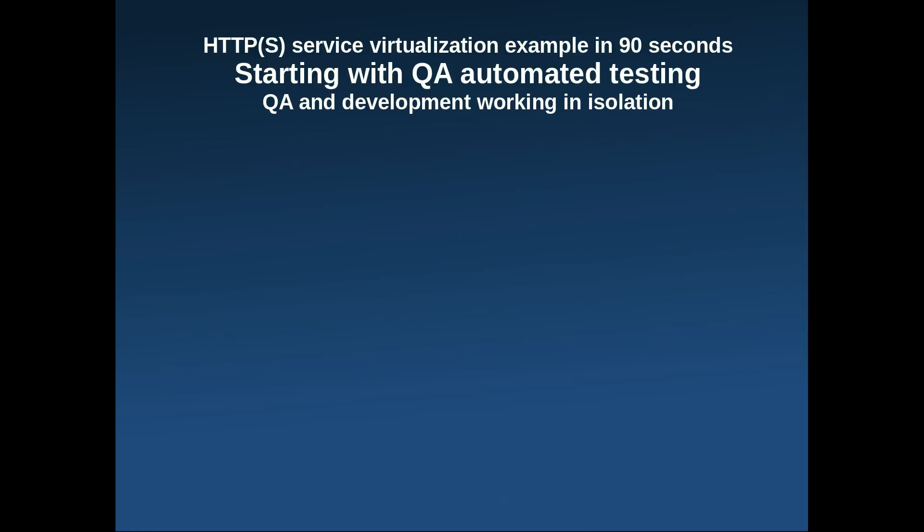This is a 90-second introduction to using HTTP stubs and virtual services for quality assurance specialists. This scenario applies to companies where QA and development teams do not collaborate. To see an example of virtual services usage on teams where QA and development teams collaborate extensively, please see the continuous integration example video. We will explore how service virtualization can be used to improve speed and stability of automated tests.